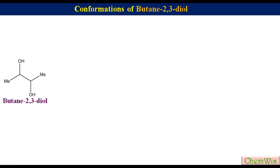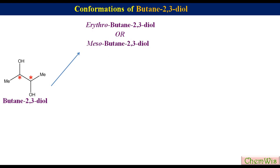Today we are going to discuss conformations of butane-2,3-diol. Butane-2,3-diol has two chiral centers and there are three stereoisomers. These are classified as erythro-butane-2,3-diol, also called meso-butane-2,3-diol. This is the structure of the meso form; the absolute configurations are 2R and 3S. It is optically inactive due to the presence of a mirror plane in the molecule.